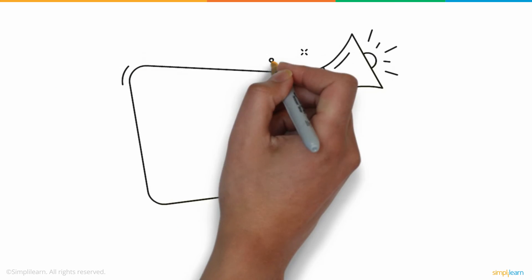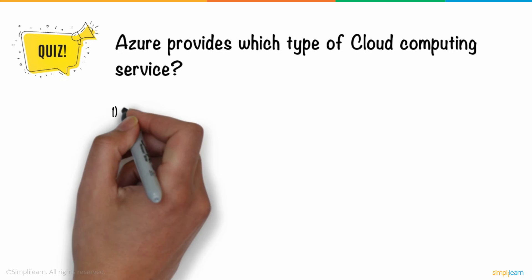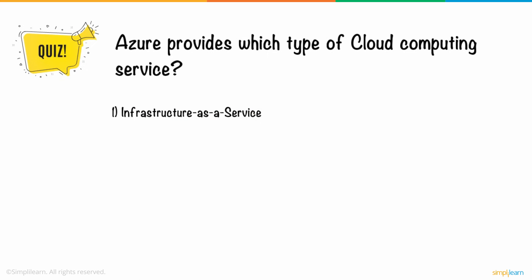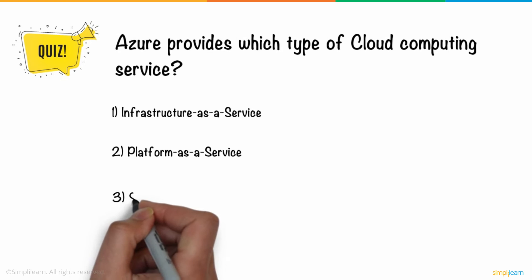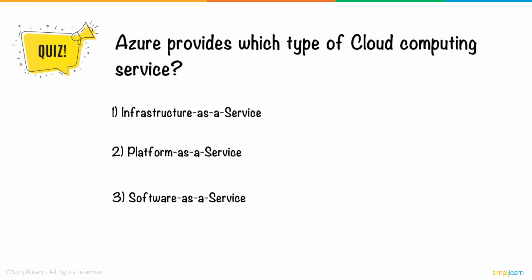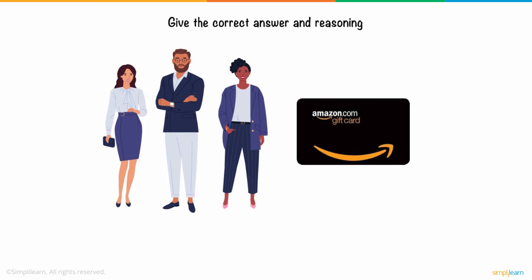So, here's a question for you. Azure provides which type of cloud computing service? One, infrastructure as a service. Two, platform as a service. Three, software as a service. Four, all of the above. Give the correct answer and reasoning and stand a chance to win an Amazon voucher.